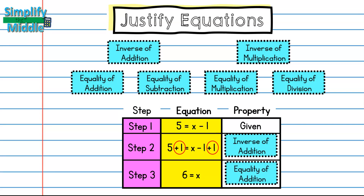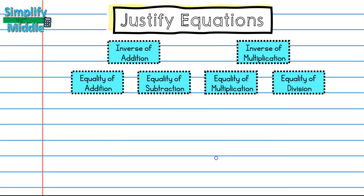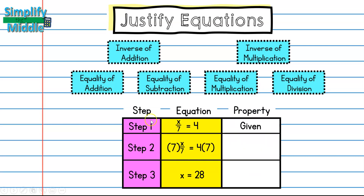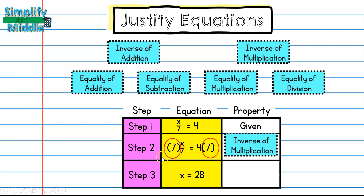Let's try another example. The equation x ÷ 7 = 4 is given. I ask what's happening to x: it's being divided by 7. So I use the inverse — multiplication. I multiply by 7 on both sides, because what I do to one side I do to the other. That is the equality property of multiplication.